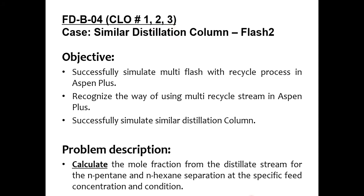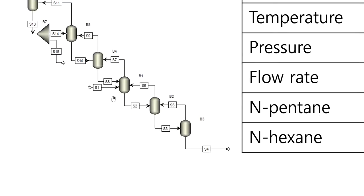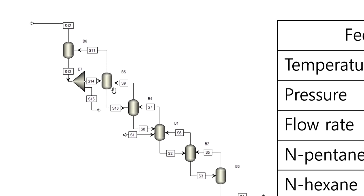This is the basic diagram given to us. The fluid package and feed conditions are the same as before. The difference is that we have introduced two more flash separators. In the previous case, S1 entered B1, S2 went to B2, S3 to B3, and S4 was the final outlet. S5 vapor went to B2, S6 to B1, and S7 was the final outlet. In the new case, the vapor from one flash separator goes to the next stage, and the liquid from one stage goes back to the stage below. The vapor from B4 goes to B5, and liquid S10 goes back to B4.